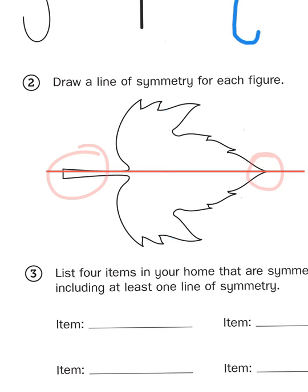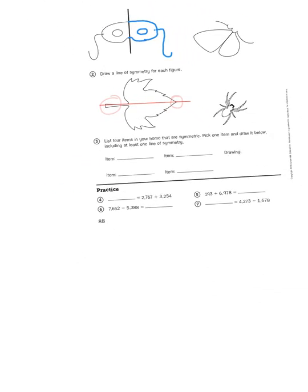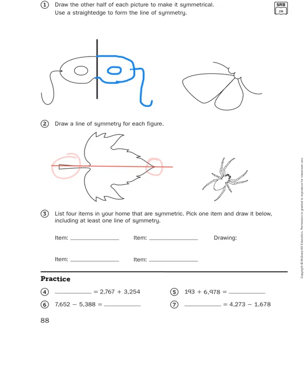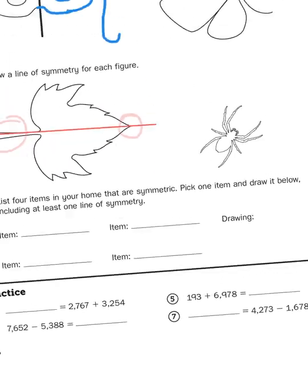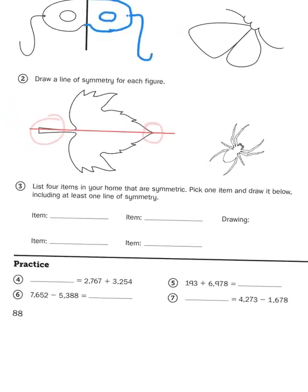Okay, so then finally for number three, you're asked to come up with four items in your home that are symmetric. Now that is a task that I can't help you with because I haven't been to your house before, but if I had to guess, you've probably got some common items that you could look at. And as it says here, pick one item and draw it below.